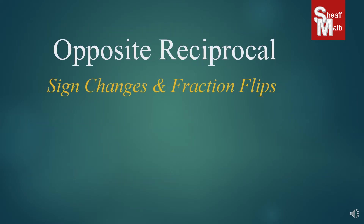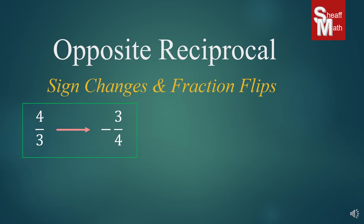An opposite reciprocal means that the sign changes and the fraction flips. Opposite means negative to positive or positive to negative. Reciprocal means the fraction flips over. Here are a few examples. The first one is 4/3 — to find the opposite reciprocal, change the sign to negative and flip the fraction, giving negative 3/4. The next example is negative 2/5 — change the sign to positive and flip the fraction to get positive 5/2.